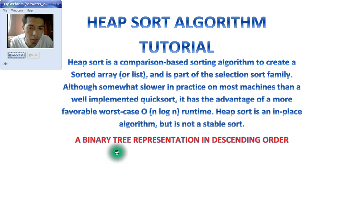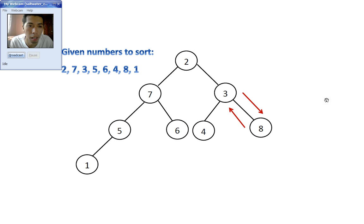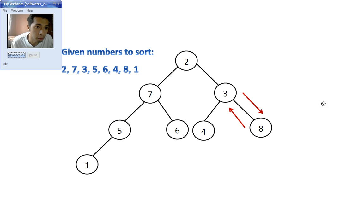The example in the binary tree representation is in descending order. Here are the given numbers to sort: 2, 7, 3, 5, 6, 4, 8, and 1.